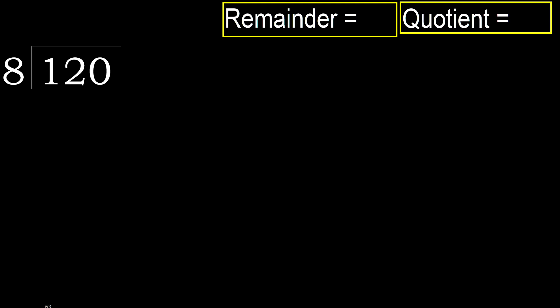120 divided by 8. 1 is less, therefore next. 12 is not less, therefore with 12. 8 multiplied by which number is nearest to 12.